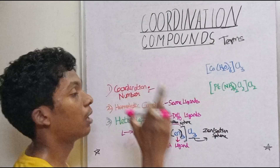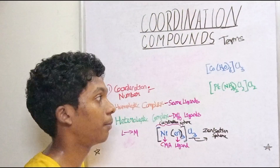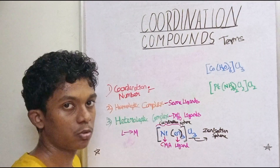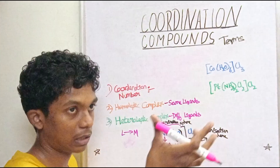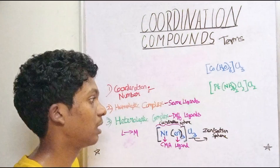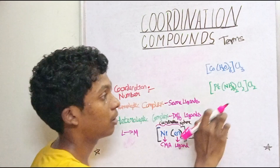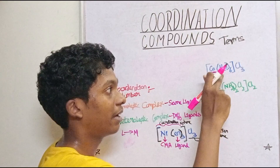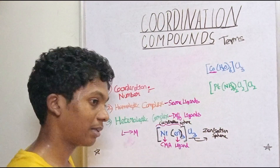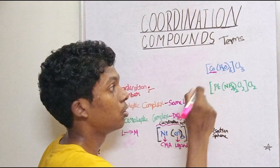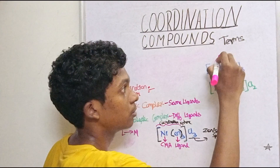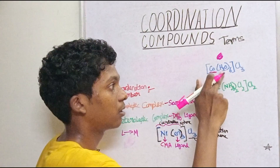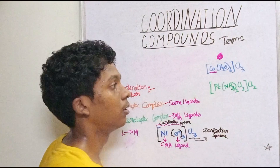What is the coordination number? The coordination number is the number of ligands bonded to the central metal atom. H2O acts as a ligand, so the coordination number is determined only from within the coordination sphere.